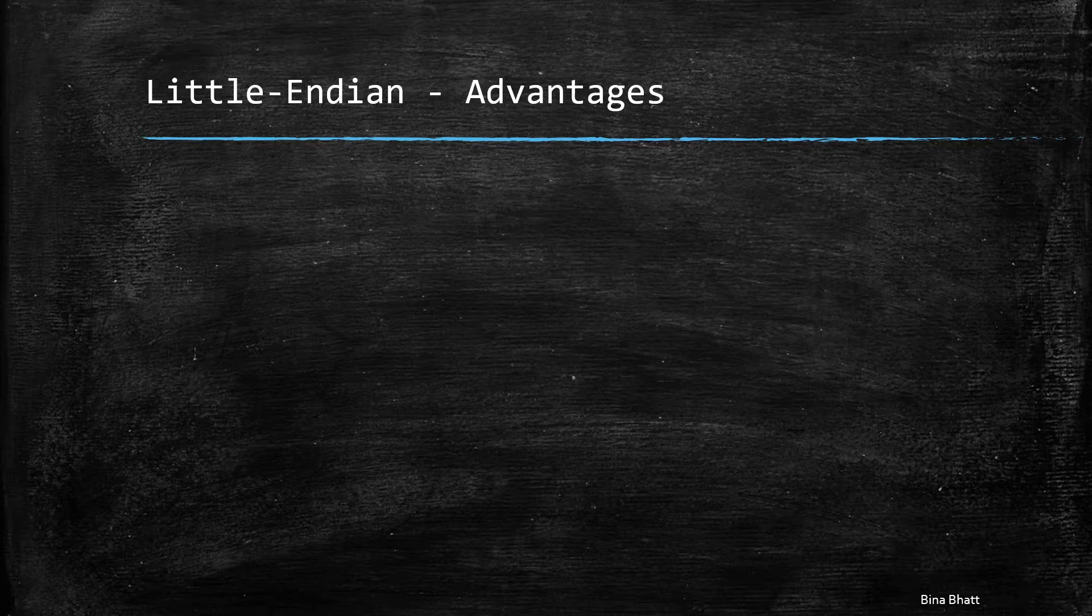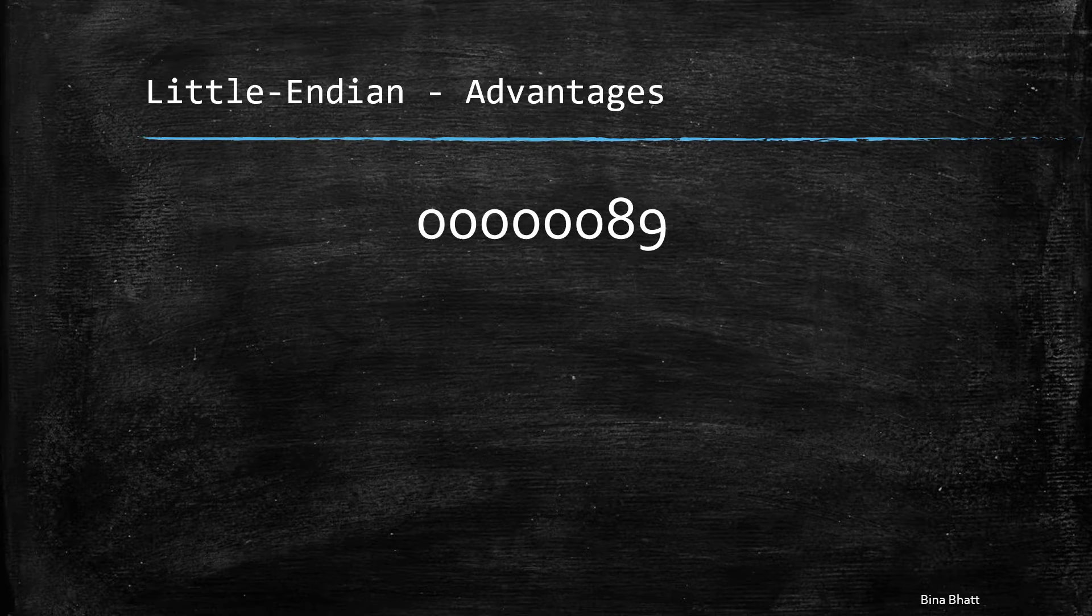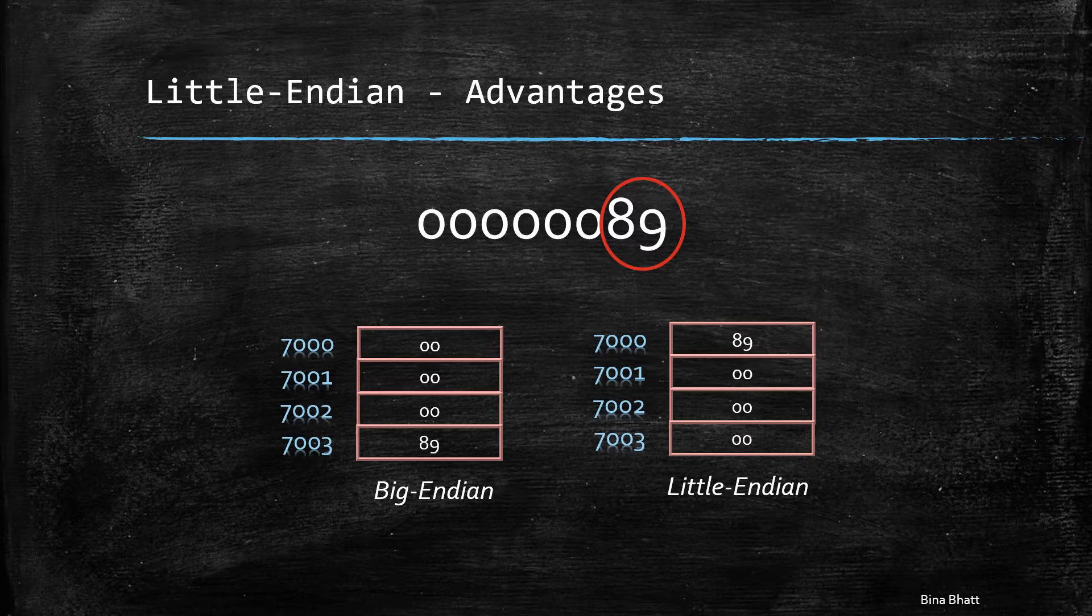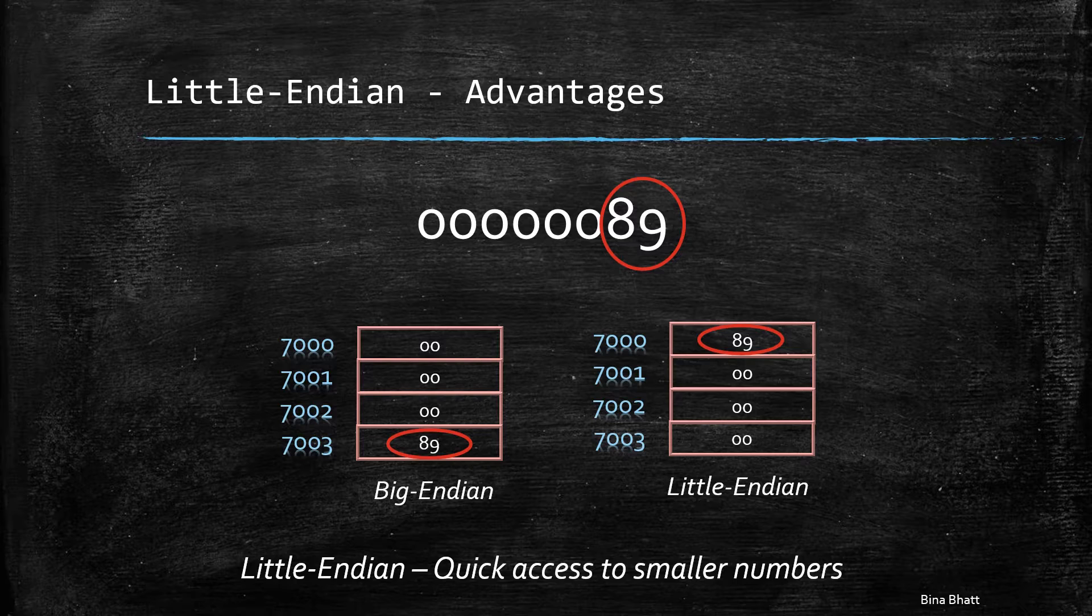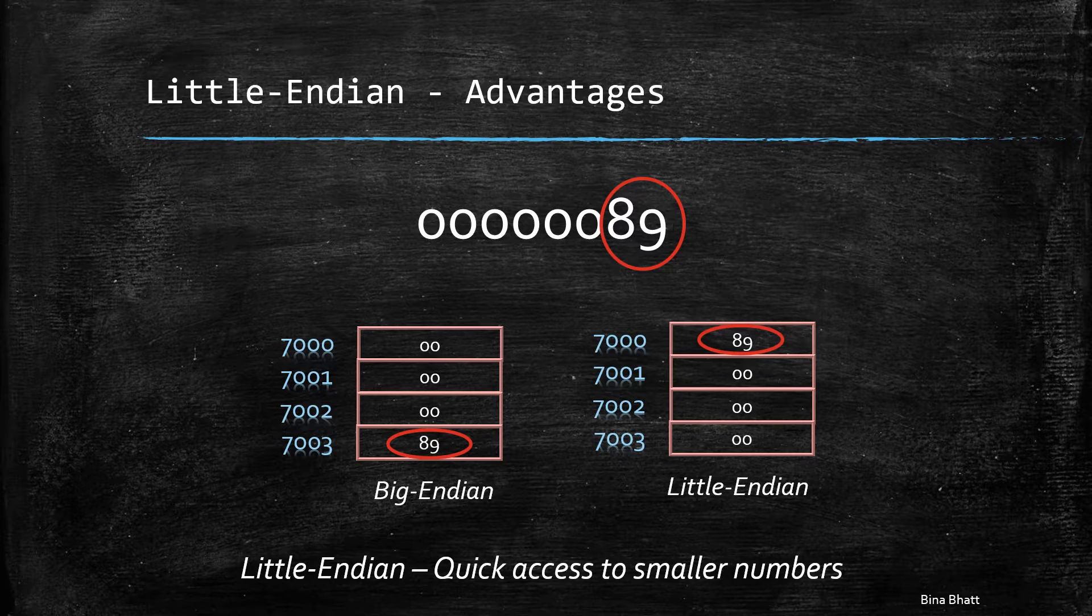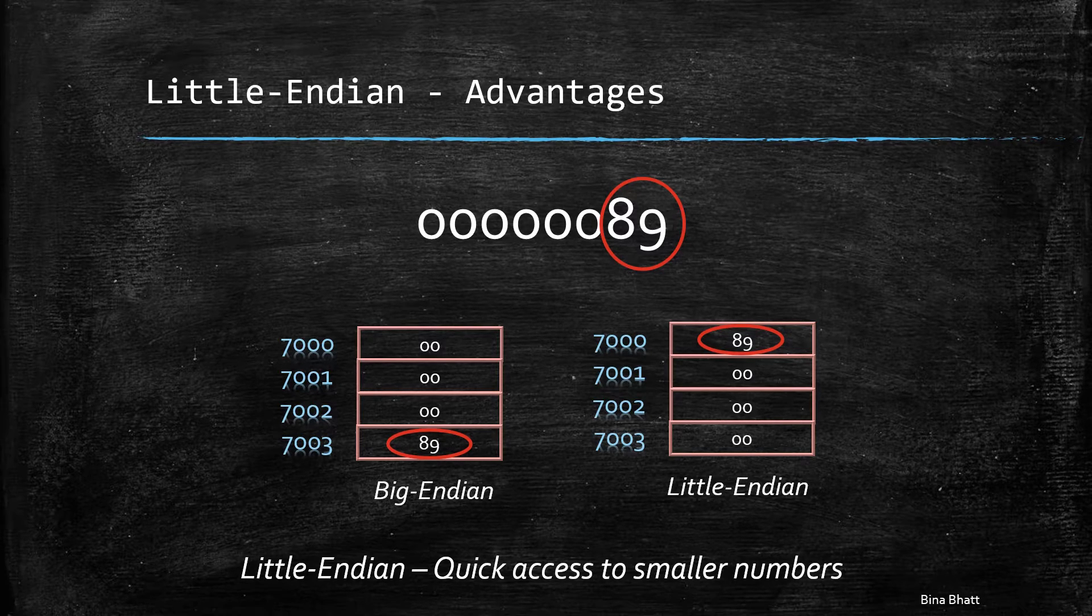Now consider a number which is stored using 32 bits and say you are interested in accessing just the non-zero part. In this case, it'll be nothing but the LSB of the number. So this operation can be done quickly in a little endian processor as LSB is the first byte. So that's another advantage of using little endian.